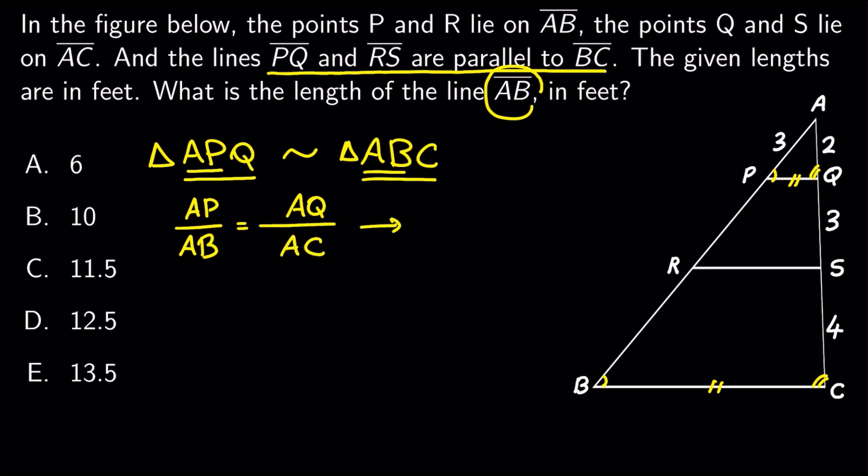Now we can substitute these values to get AP is 3, AB is unknown, AQ is 2, and AC is 9.